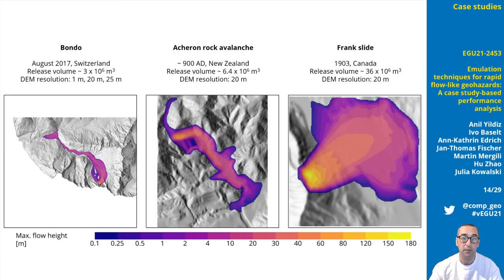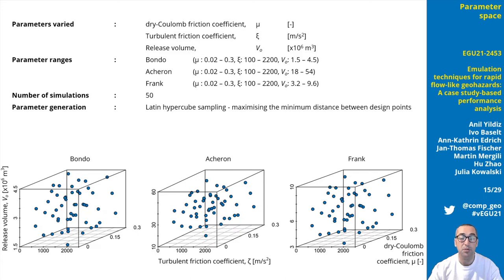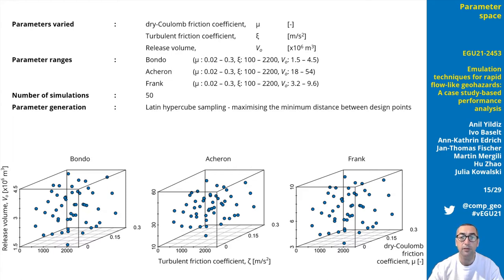We have chosen three case studies to test the potential of emulating the outputs of R-AVA flow. Cases selected are the Bondo rock slide in Switzerland, Acheron rock avalanche in New Zealand, and Frank slide in Canada. We vary three parameters between simulations: the dry Coulomb friction coefficient between 0.02 and 0.3, the turbulent friction coefficient between 100 and 2200 meters per second squared, and the release volume between 50% and 150% of the original. 50 sets of parameters were generated randomly using Latin hypercube sampling to maximize the minimum distance between points.